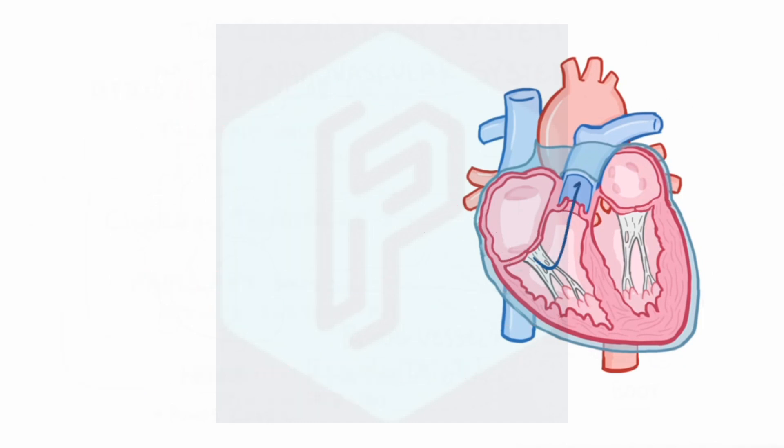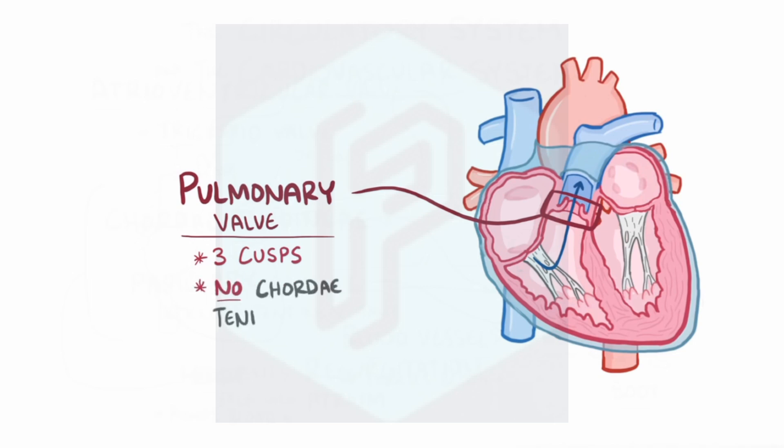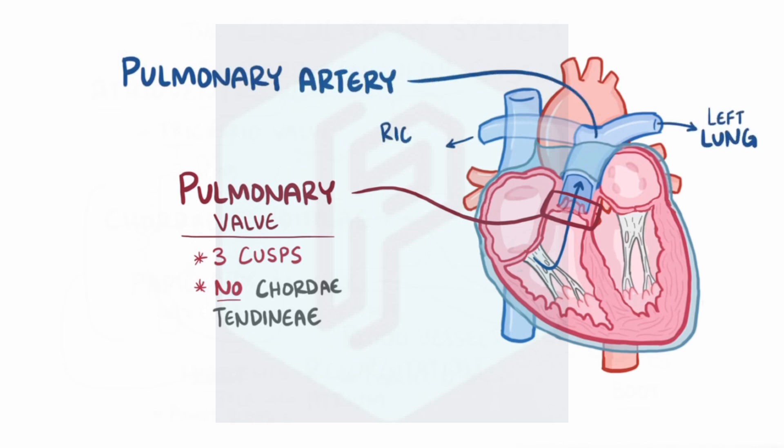That being said, that contraction pumps the blood out of the pulmonary valve, which just like the tricuspid valve has three cusps and also prevents blood from going backward. But unlike the tricuspid valve, the pulmonary valve doesn't have any of those chordae tendinae. Once it's past the pulmonary valve, the blood goes into the pulmonary arteries, which carry blood away from the heart to the left and right lung. Just remember that arteries start with an A and also carry blood away from the heart.